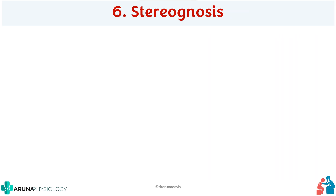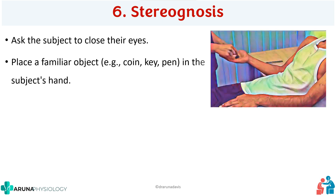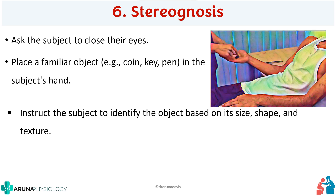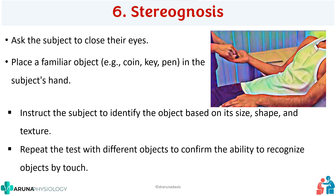Next is stereognosis. In stereognosis you are testing the ability of the subject to identify common objects. Ask the subject to close the eyes, then place a familiar object like a coin, key, or pen in the subject's hand. The subject should feel the object and identify its size, shape, and texture, then tell what it is. Repeat on the other side using a different object — if you used a coin on one hand, use a pen on the other. Don't repeat the same object for both hands.